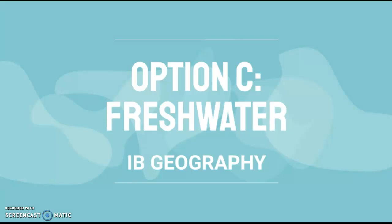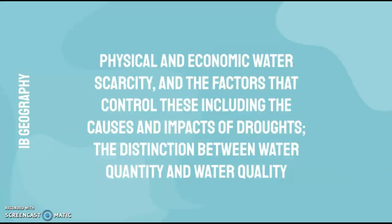This video covers option C: fresh water. The syllabus point is physical and economic water scarcity and the factors that control these, including the causes and impacts of droughts, and the distinction between water quantity and water quality.